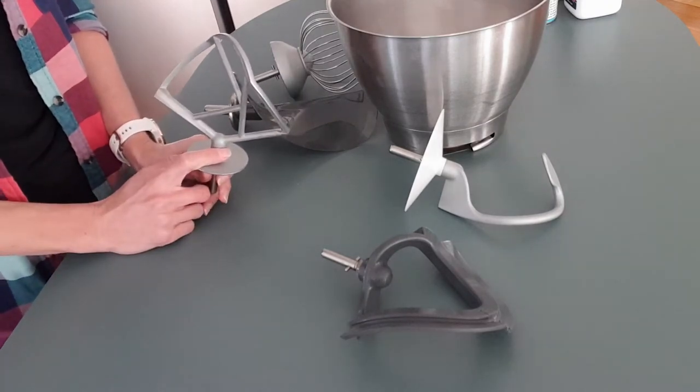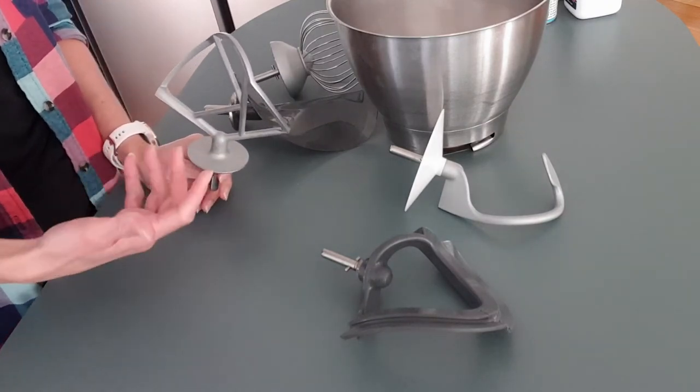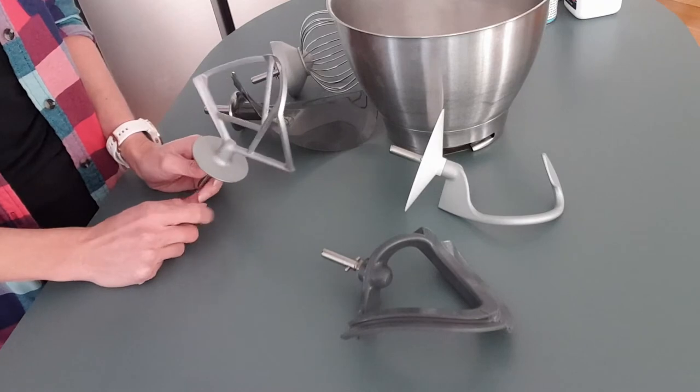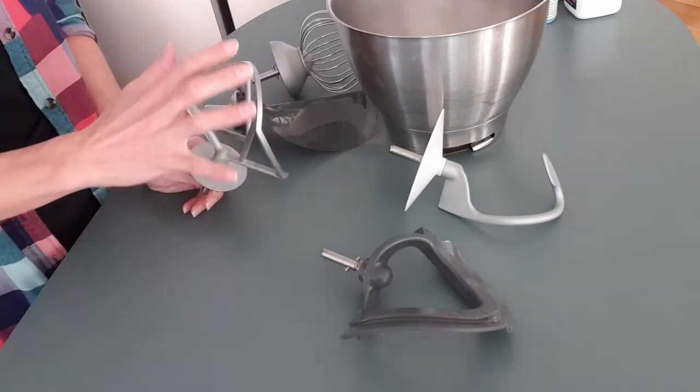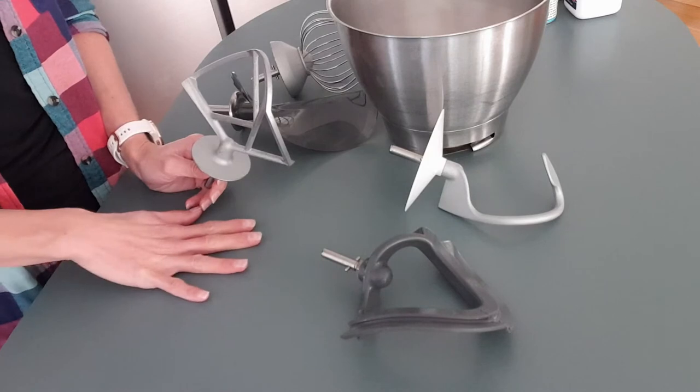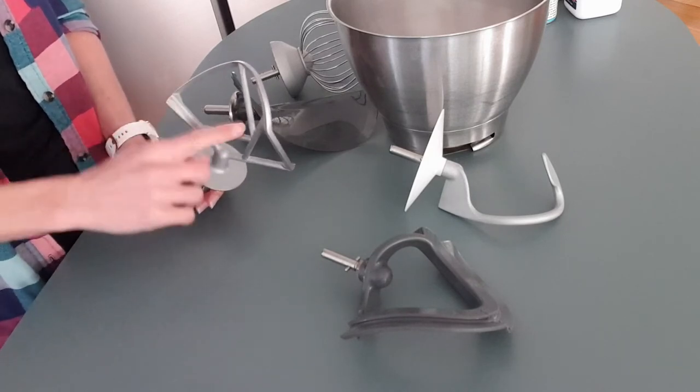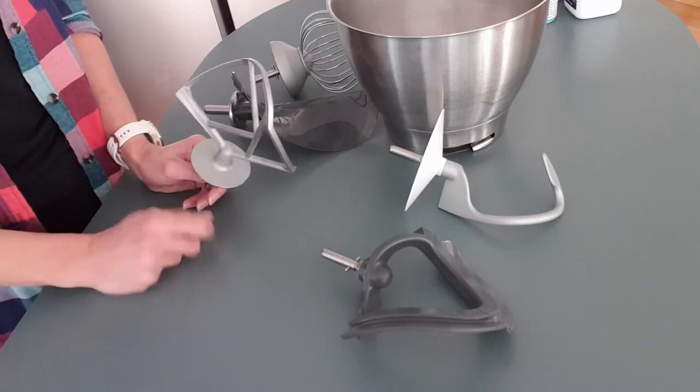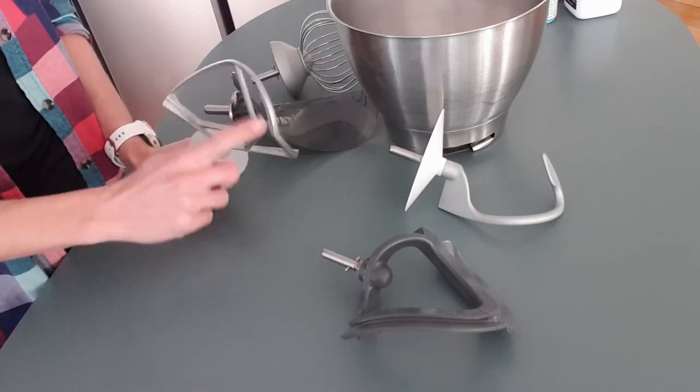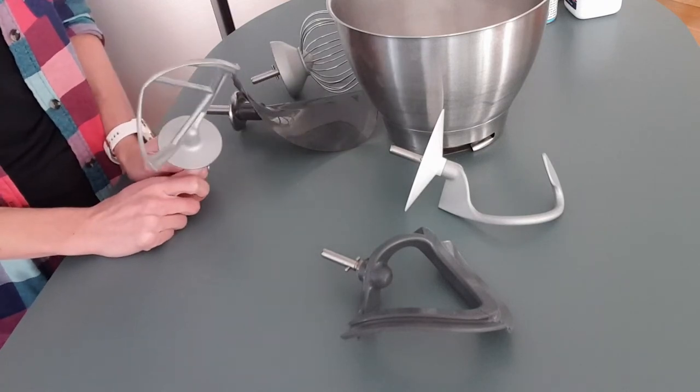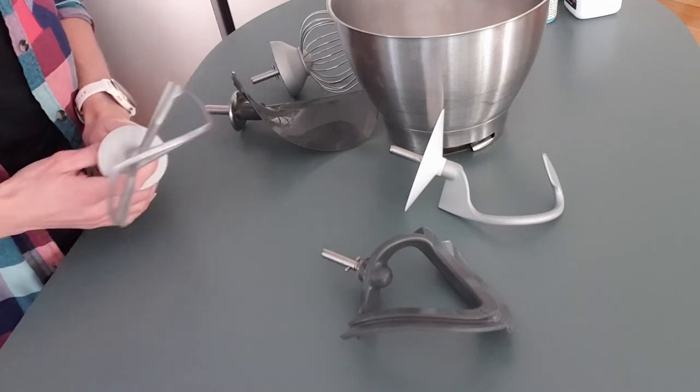So the K beater works really well with most cake batters and things. You can also use it to crush up cookies, so if you're looking for cookie crumbs for a cheesecake base, this works really well to crush up the cookies. And I've even heard people say they mash up their vegetables with this one. I've never tried it, but there you go, if you ever want to give that a try.